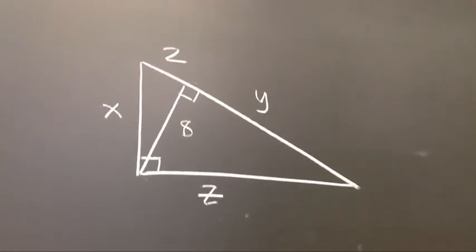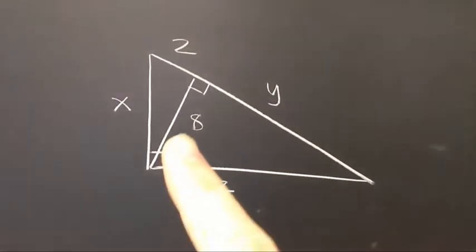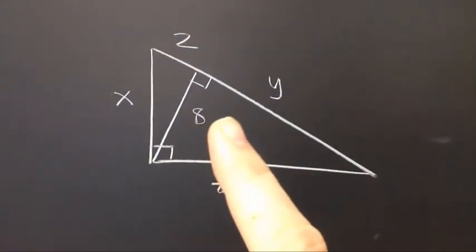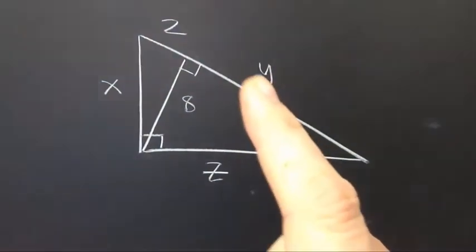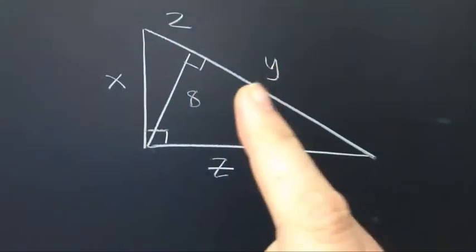So the way that it works is the altitude here, 8, is the geometric mean of 2 and y.